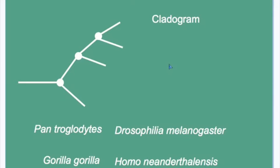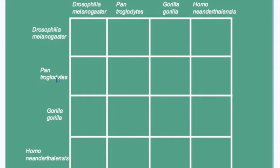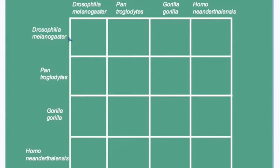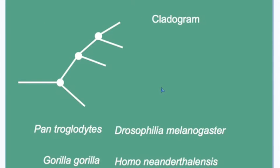And if you need to return to my lesson on cladograms, you can click here and then return to this lesson, where we will place these four species at appropriate positions in this simple cladogram. The basis of our classification will be base sequences of the COX-1 gene. The data that we collect on the differences in the sequences when we compare the various organisms as pairs will be placed into a table like this. And then using this data, we will return to complete our cladogram.